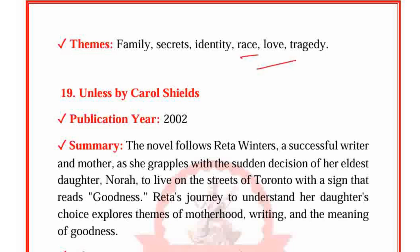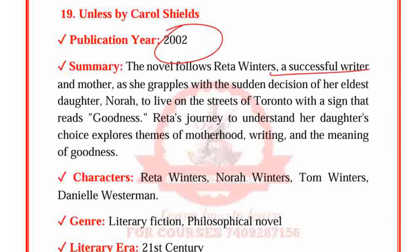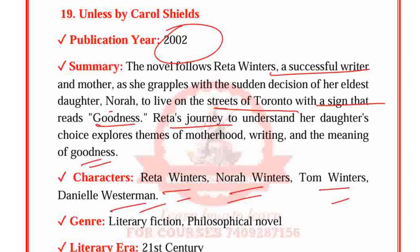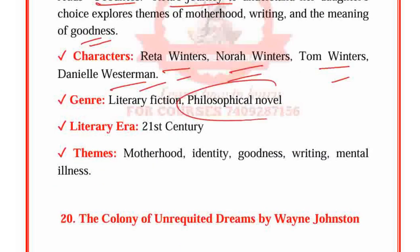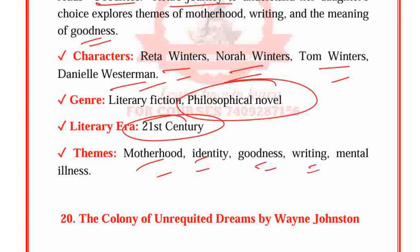Unless by Carol Shields, published in 2002. The novel follows Reta Winters, a successful writer and mother, as she grapples with the sudden decision of her eldest daughter Nora to live on the streets of Toronto holding a sign that reads 'Goodness.' Reta's journey to understand her daughter's choice explores themes of motherhood, writing and the meaning of goodness. Characters: Reta Winters, Nora Winters, Tom Winters and Daniel Westerman. Genre: Philosophical novel. Period: 21st century. Themes: Motherhood, Identity, Goodness, Writing and Mental illness.